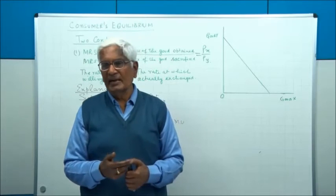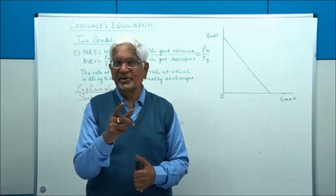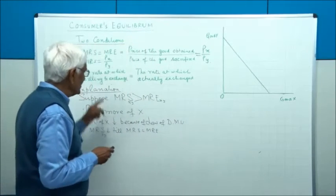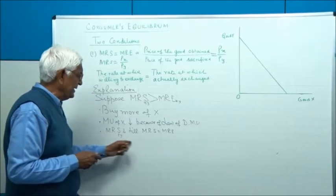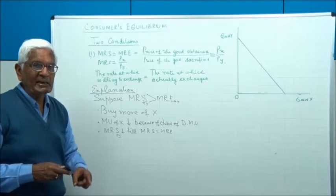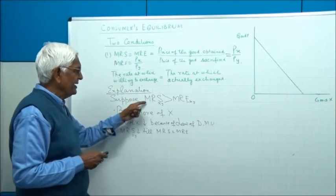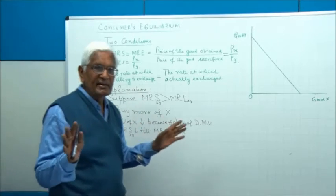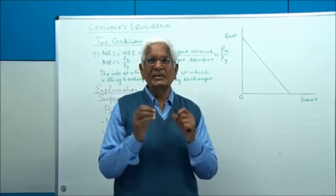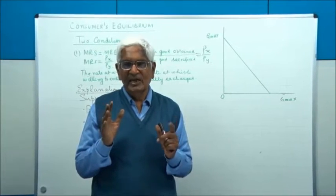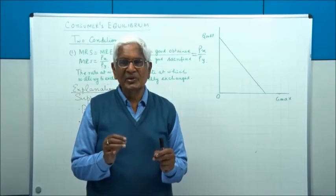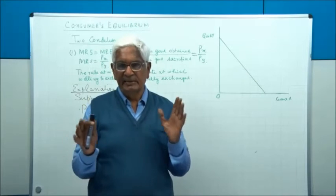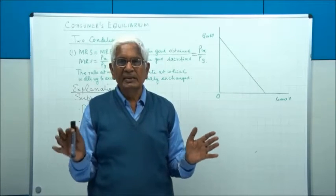In the examination, should you write both cases? Not necessarily, unless specifically asked. You may explain one case and then add a line: 'The opposite will happen if MRS(XY) is less than MRE(XY).' Then finally add: in order to be in equilibrium, the condition that MRS equals PX upon PY, or MRS equals MRE, must be satisfied. Otherwise, the consumer will not be in equilibrium.